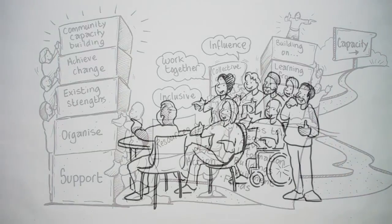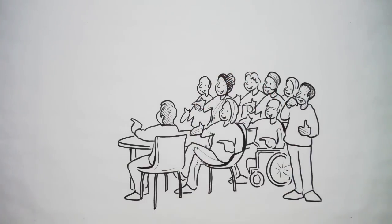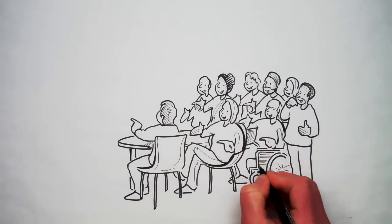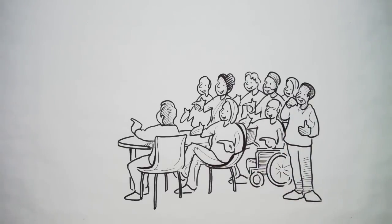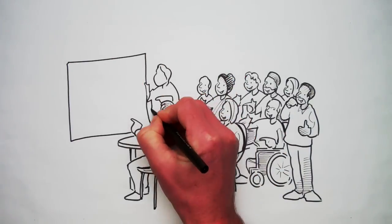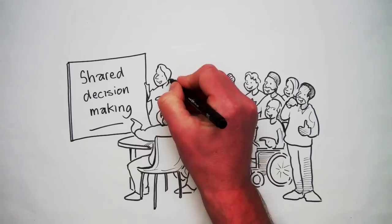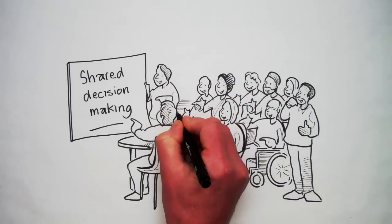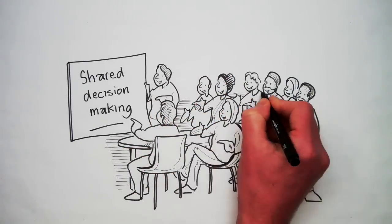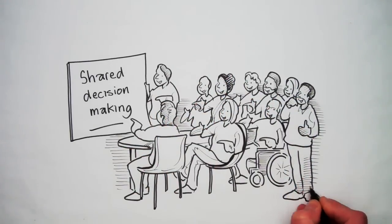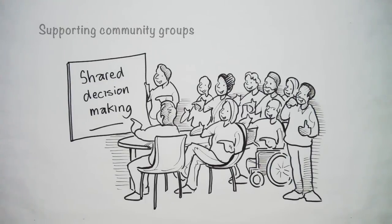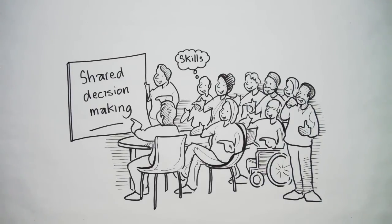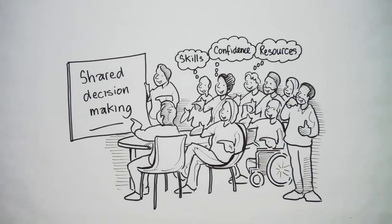Many policies rely on strong communities. Some already exist, but others will require community capacity building support to play an equal part in shared decision making. Public bodies and grant making bodies have a responsibility to make sure that happens. They can do this by supporting community groups, particularly those that are disadvantaged or excluded, to develop their skills, confidence, resources and influence that build their capacity.